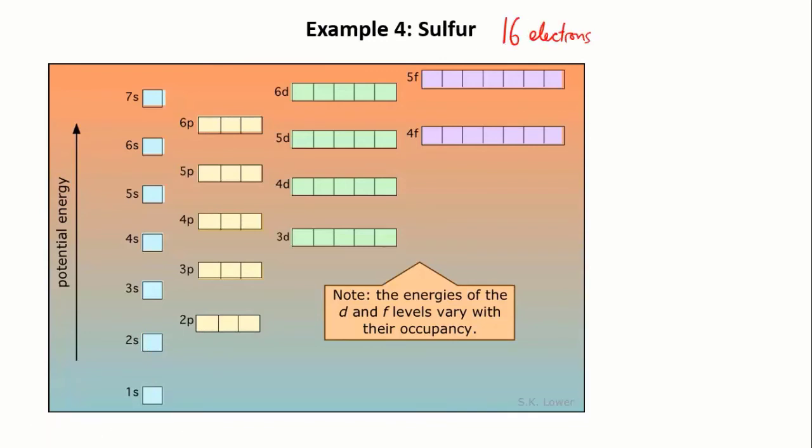So last example: sulfur. Sulfur is the sixteenth element, so we have 16 electrons to distribute. We fill the 1s and the 2s, all the 2p orbitals, the 3s, and so far we've used up 12 of the 16 electrons. The four remaining electrons are going to be put into the 3p orbitals. First we put one electron in each, and now we have one final electron left over, so we put that into one of the 3p orbitals. It doesn't matter which one, but we put it in the leftmost box by convention. So the shorthand for this will be 1s2 2s2 2p6 3s2 3p4.